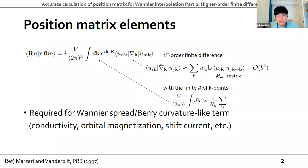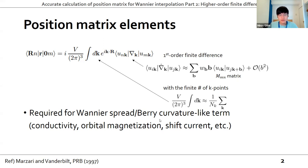B is a neighboring vector from K to K plus B, and W is the corresponding weight or coefficient for the finite difference. These position matrix elements are required for maximally localized Wannier functions to calculate conductivity, orbital magnetization, spin current, and so on. So it is important to make the position matrix converge fast.